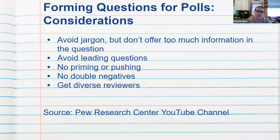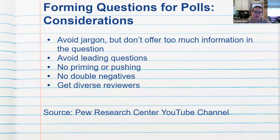No double negatives — double negatives in a survey question can confuse people as to what you are actually asking. You want to get diverse reviewers, meaning when Pew Research Center sends out a survey, they have people whose entire job it is to review these questions and make sure they make sense and are answerable. You also don't want double-barreled questions, which means asking two questions in the same question — you want to break those up into single questions.